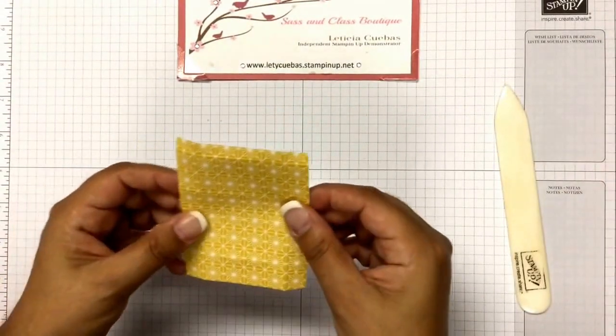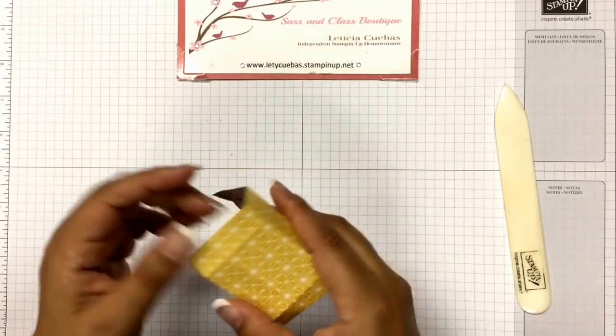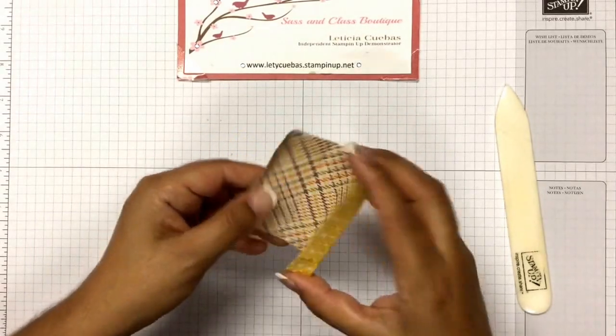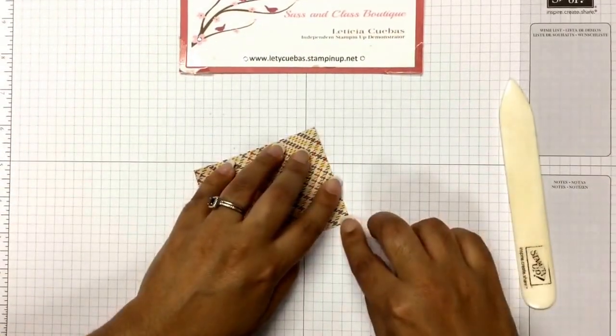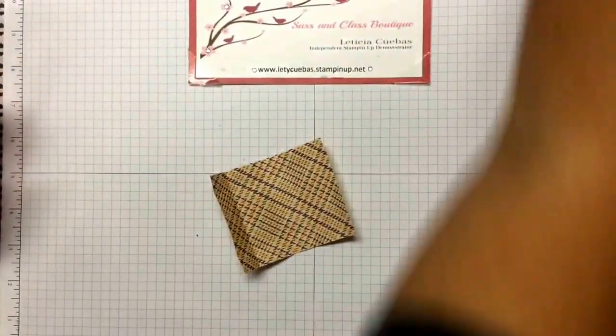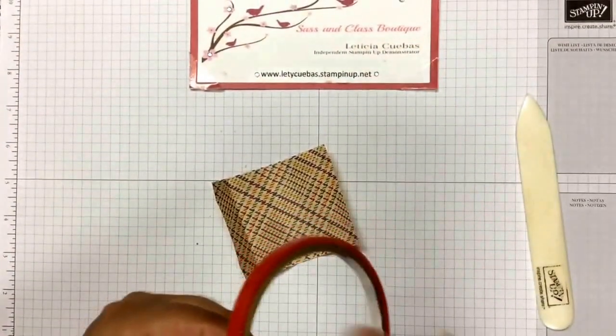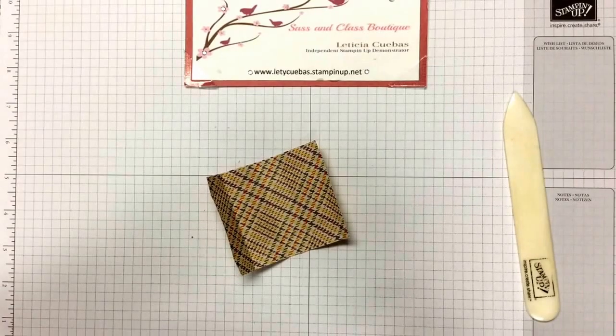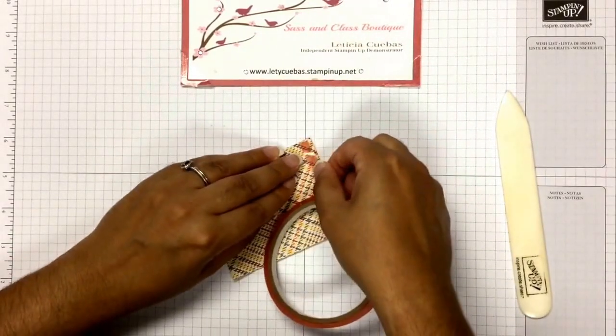On this one, we do not need to cut anything at all. What we need to do is put sticky strip right here. I'm going to use sticky strip because I want something that's going to hold very well, because this is a small box.